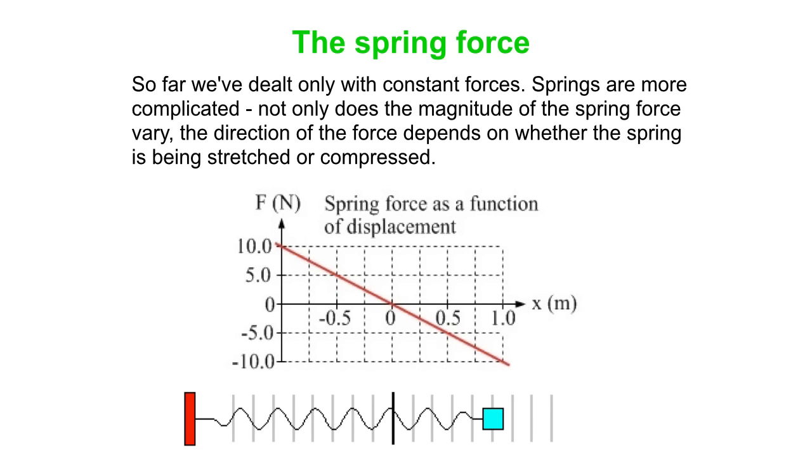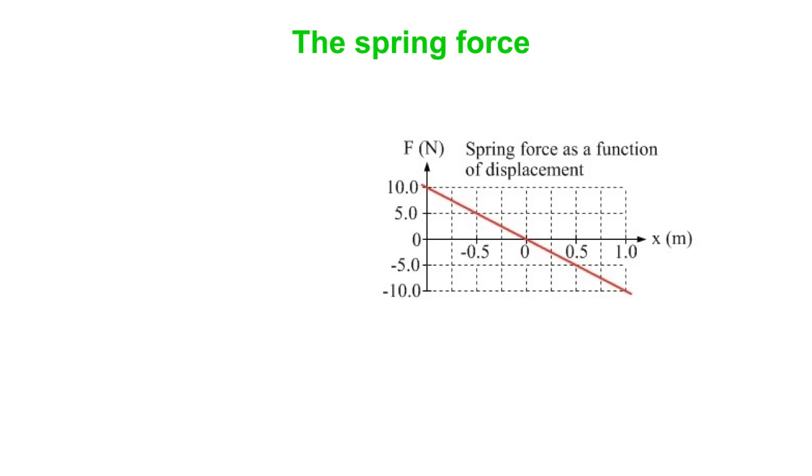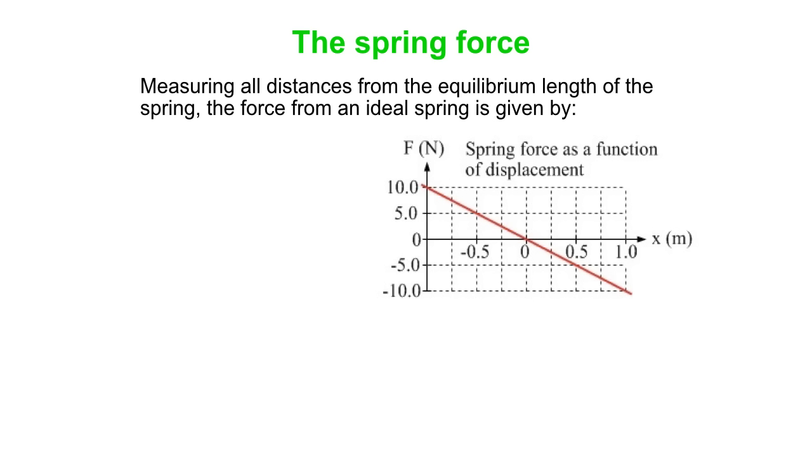So you look at the spring force as a function of displacement. It's a nice, straight-line graph. If we measure all distances from the equilibrium length of the spring, that's where zero is on the graph, then the force is given by what we call Hooke's Law. Hooke's Law says the force is opposite in direction to the displacement from equilibrium and proportional to it.